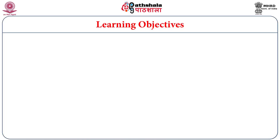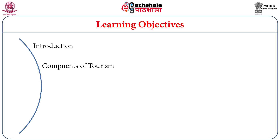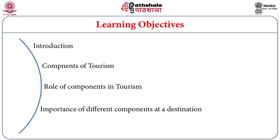The objectives of this module include understanding the components of tourism, the role of components of tourism, and the importance of different components at a particular destination. For example, the components differ from one place to another — at some destinations we need only water transport, at others only air transport. Most destinations have their own choices of tourism components.